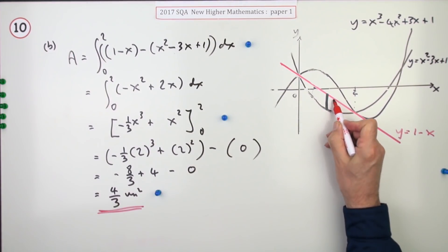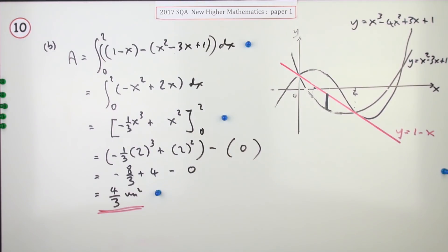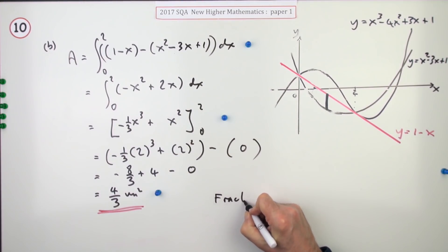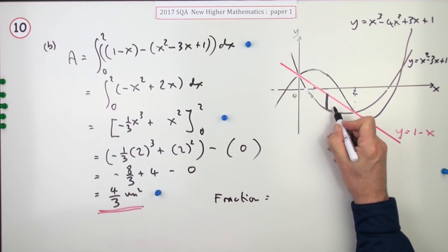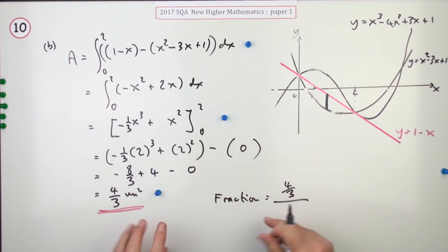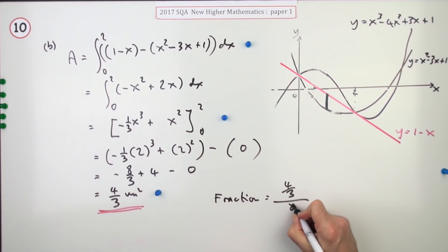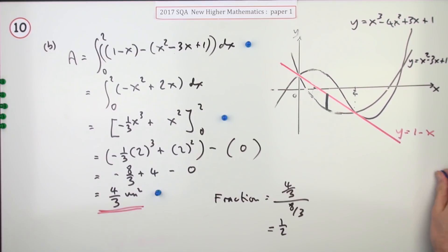That's the area between the line and the lower curve — 4/3. So what fraction of the total area lies beneath the line? The area beneath is 4/3, out of the total area which was 8/3. Multiplying both by 3 gives 4 over 8, which cancels down to one half. That's the final mark.